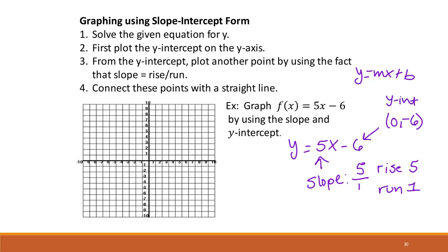If I plot the point 0, negative 6, and my slope is 5 over 1, I go up 5 and over 1, landing at negative 1 on the y-axis and 1 on the x-axis. Then we connect those and label our points. This first one was our y-intercept, 0, negative 6, and the second one, 1, negative 1, is our next point.